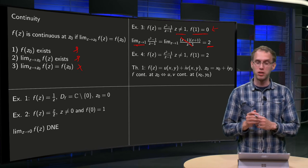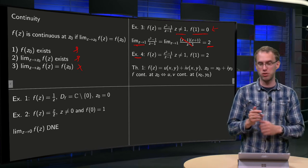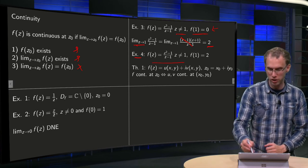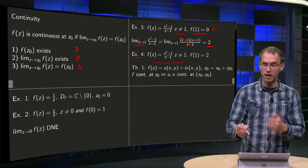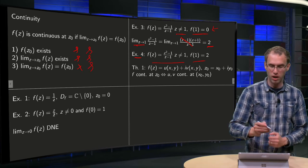Last example, example 4. Of course we can easily make this function f continuous. Take the same function, if we define f(1) = 2, because then all three conditions are met.